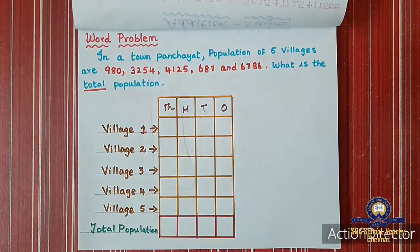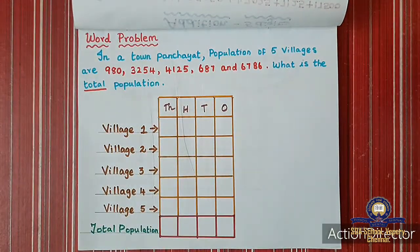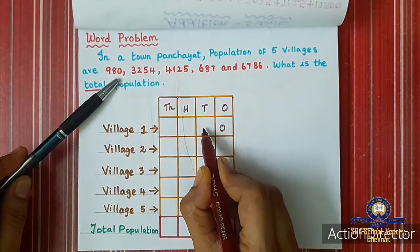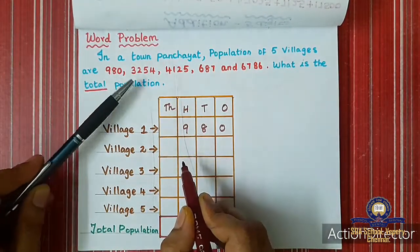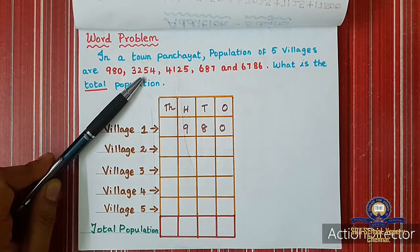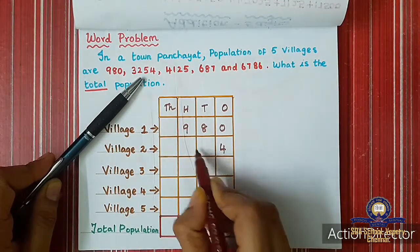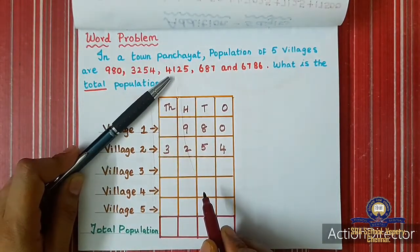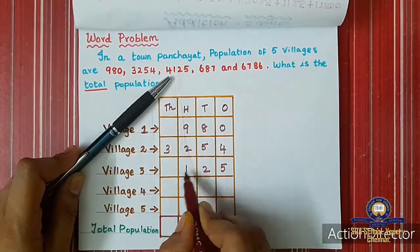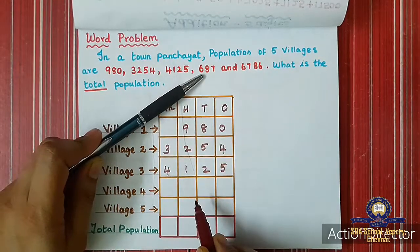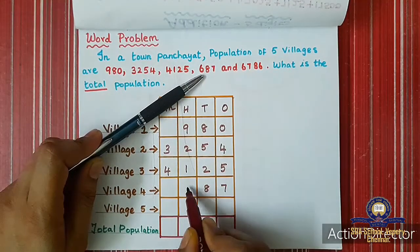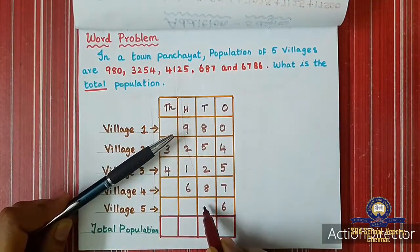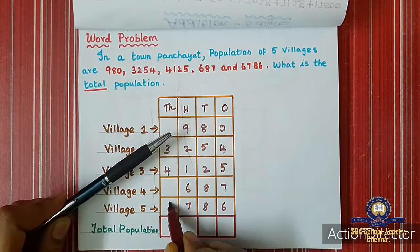Every time when adding numbers, write the place values first: 1, 10, 100, 1000. Now write the numbers one by one starting from the ones digit. First number 980: 0, 8, 9. Second number 3,254: 4, 5, 2, 3. Then 4,125: 5, 2, 1, 4. Then 687: 7, 8, 6. Then 6,786: 6, 8, 7, 6.